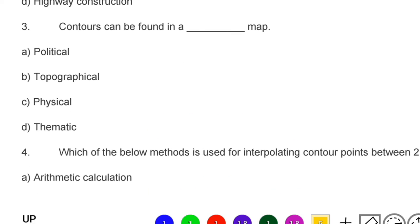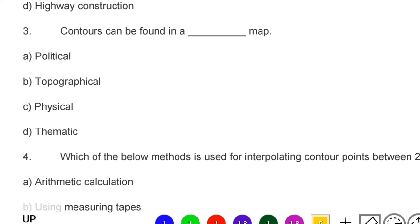Next question: contours can be found in which type of map — option A: political, option B: topographical, option C: physical, option D: thematic. The correct answer is option B, topographical.